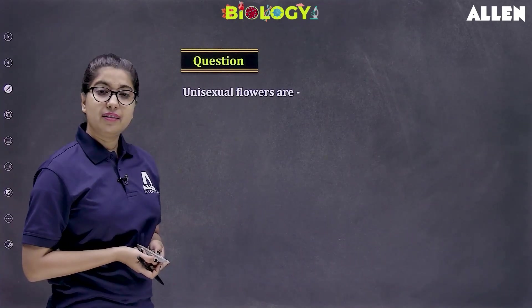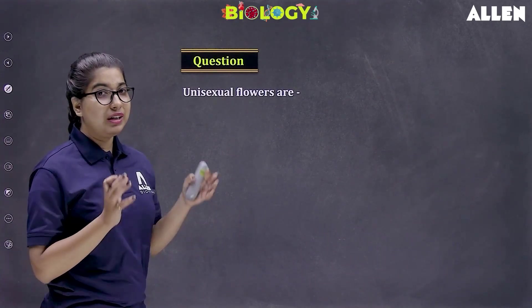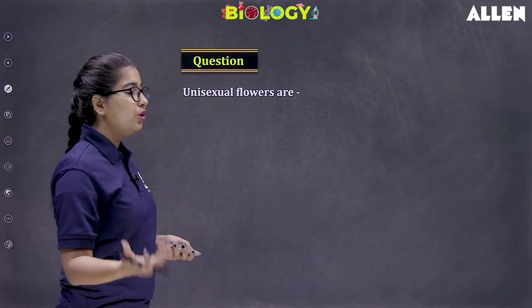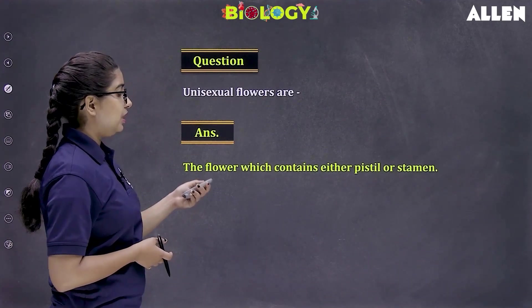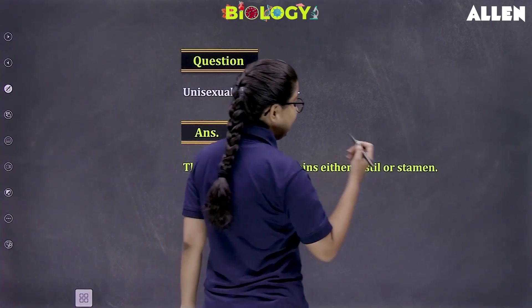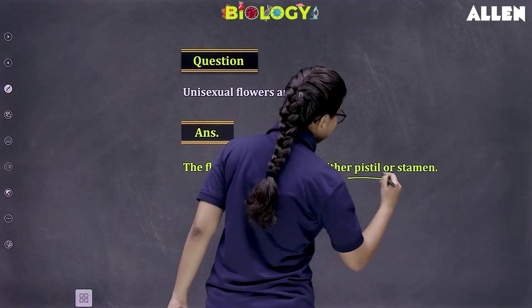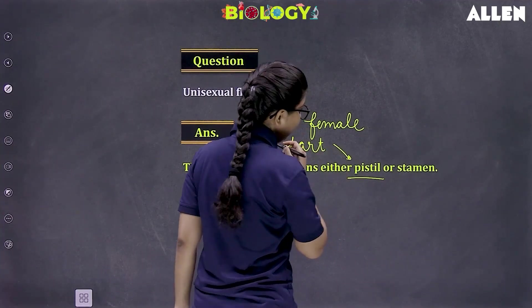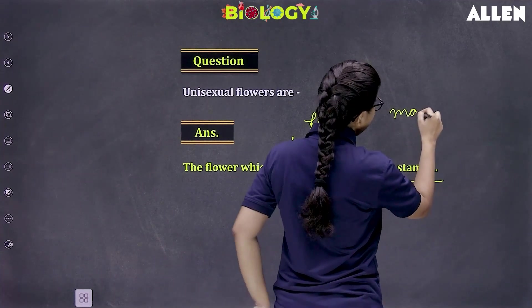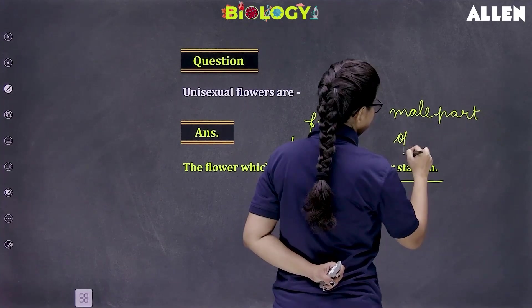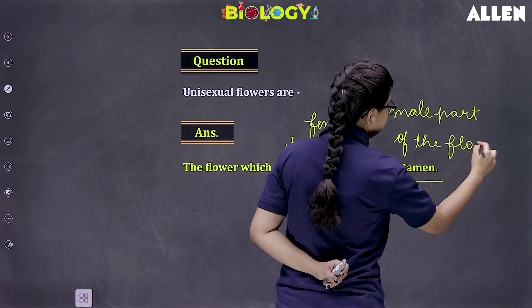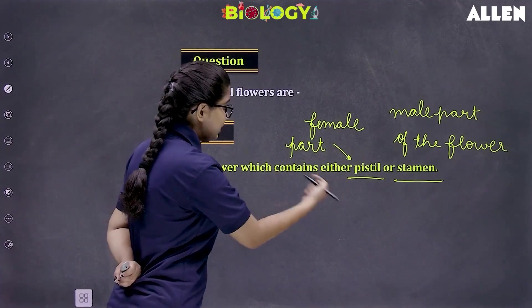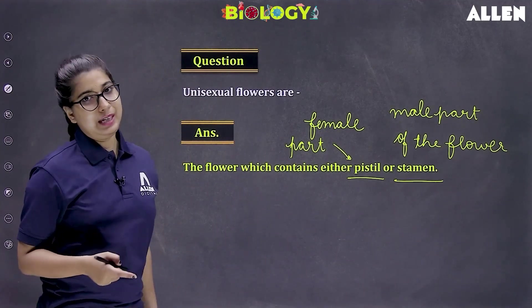Unisexual flowers are those flowers which are either male or female — they either have the male part or the female part. So they will either produce the male gamete or the female gamete. The flower which contains either the pistil or the stamen: the female part of the flower is termed the pistil, and the male part of the flower is termed the stamen. So now we know the names also — the female part of the flower is the pistil and the male part is the stamen.